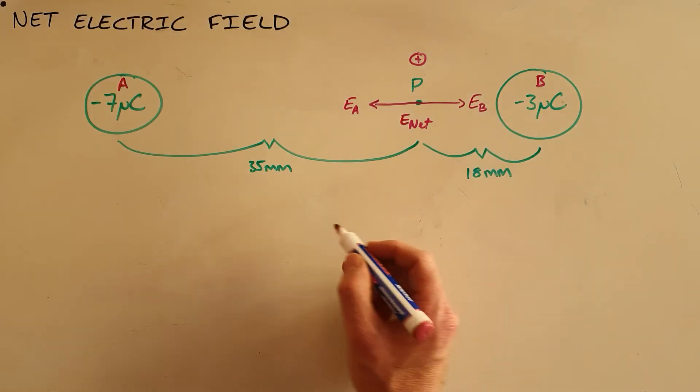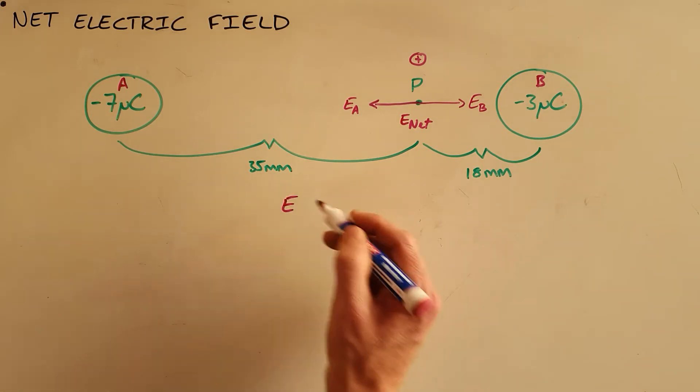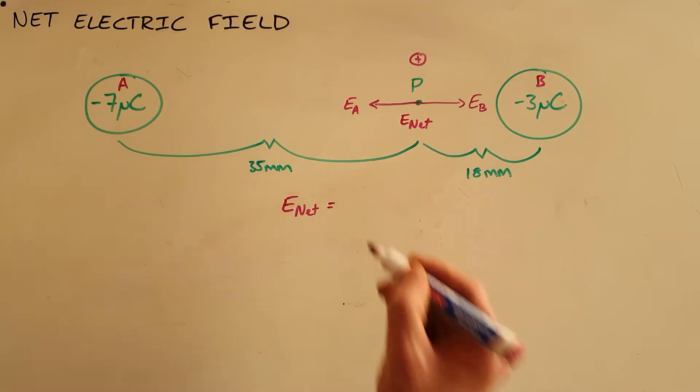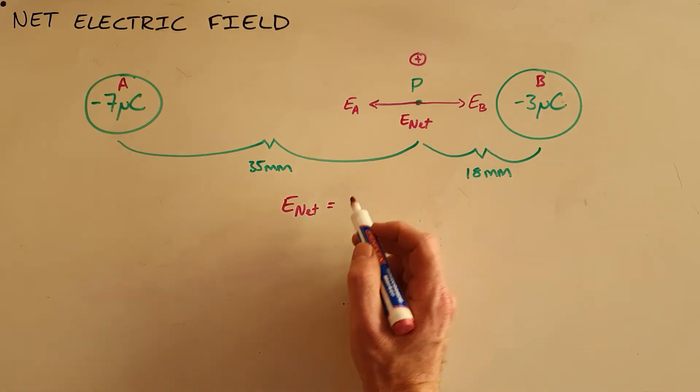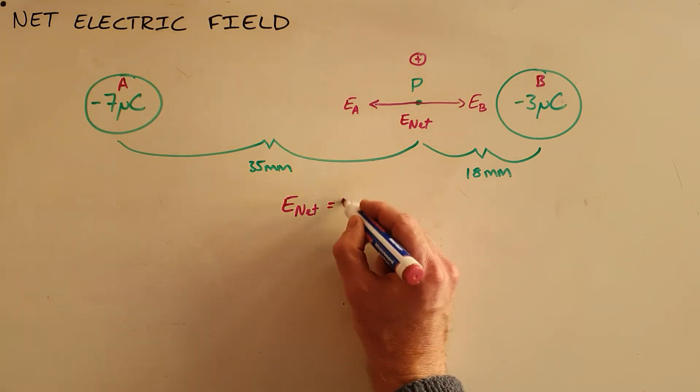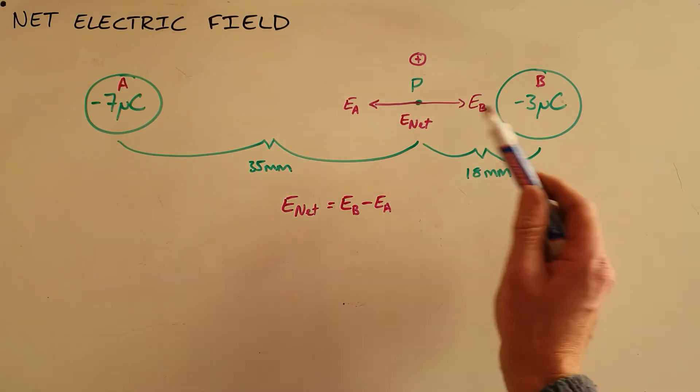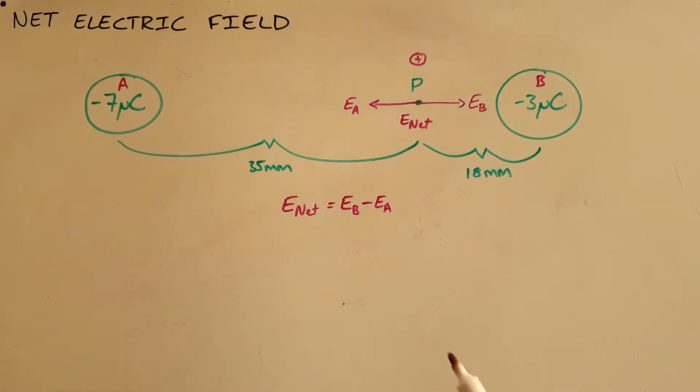So we can immediately write down our expression for the net electric field by saying our net electric field at point P is going to be equal to the electric field as a result of B minus the electric field as a result of A. Once again we must subtract them because they are vectors acting in opposite directions.